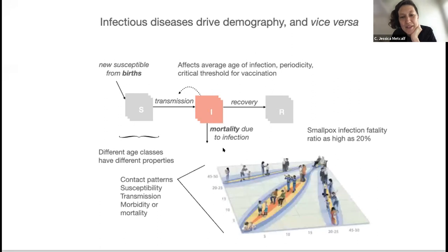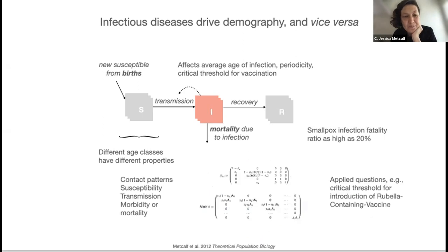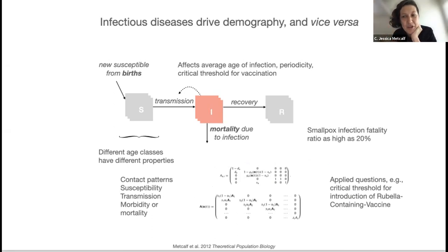Audrey mentioned that contact patterns are really critical to how transmission works out, and there's been a lot of work driven by Audrey on this. To grapple with that, you just need to start with the same framework and blow it up to include your number of patterns. A lot of work I did when I first moved into infectious disease dynamics was thinking about rubella dynamics and trying to estimate the critical threshold for vaccination, to ensure you weren't driving an increase in the average age of infection sufficient to cause most cases to occur in women of childbearing age.